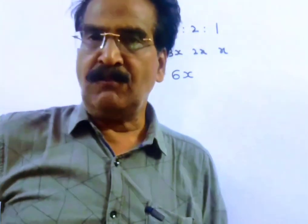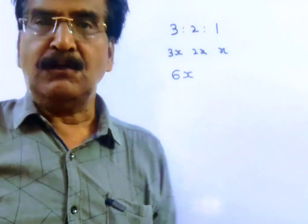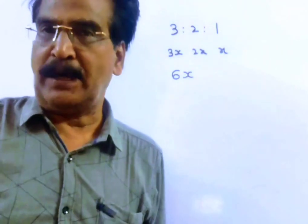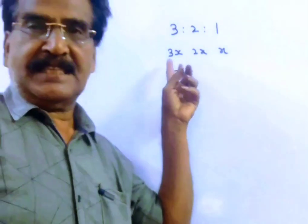See friends, a diamond was cut into three pieces whose weights are in the ratio 3 is to 2 is to 1. So the weights are say 3x,